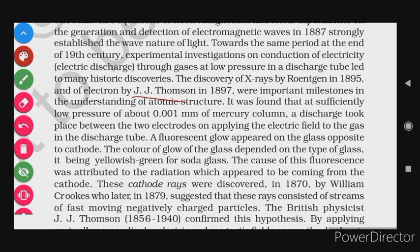It was found that at a sufficiently low pressure of about 0.001 mm of mercury column, a discharge took place between the two electrodes on applying an electric field to the gas in the discharge tube.